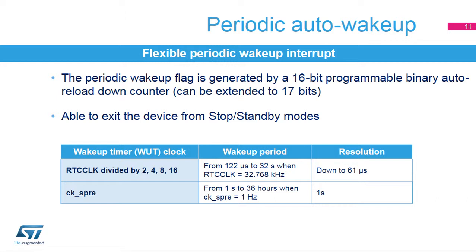With the divided RTC clock, the wake-up period can be from 122 microseconds to 32 seconds when the RTC clock frequency is 32.768 kHz. The resolution is down to 61 microseconds in this case. With the CKSPRE clock, the wake-up period can be from 1 second to 36 hours when the CKSPRE clock is at 1 Hz.